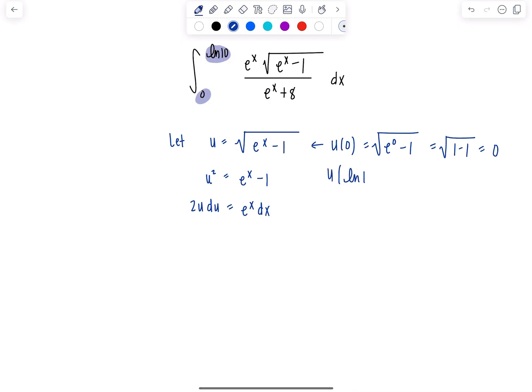And then u of ln of 10, the upper limit, this is square root of e to the natural log of 10 minus 1. That's going to be rad 10 minus 1, which is rad 9, so 3. So our new limits go from 0 to 3.